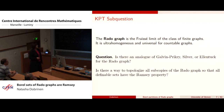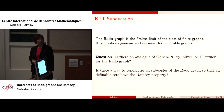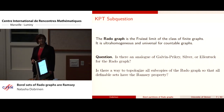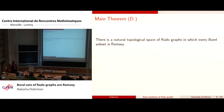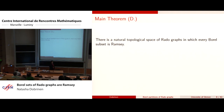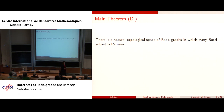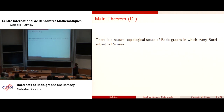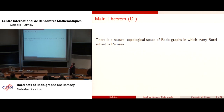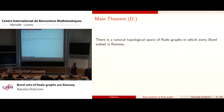The question is: is there some analog of Galvin-Prikry, Silver, or Ellentuck for the Rado graph? The theorem for this talk is that there is a way to topologize it — it's the one you'd think of, just the Baire space topology — and you can find a space of Rado graphs where every Borel subset is Ramsey. Specifically, there is a subspace, which I'll call script R, of the Baire space, where every point represents a Rado graph by some coding as subsets of ω.